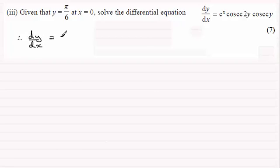I can see we've got the exponential function e^x, but then cosec 2y is 1/sin 2y and cosec y is 1/sin y.